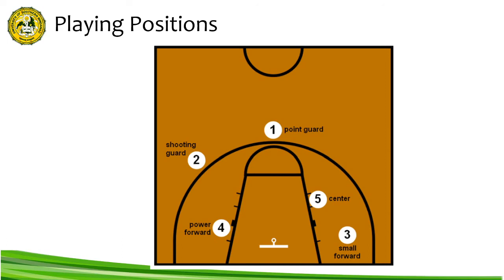The power forward does many of the things a center does — playing near the basket while rebounding and defending taller players — but also takes longer shots than centers. The center, or number five, uses height and size to score during offense and protect the basket closely during defense or to rebound. The center is the tallest player on each team, tries to score on close shots and rebound on offense, and on defense tries to block opponents' shots and rebound their misses.